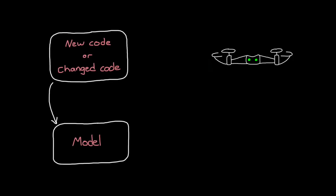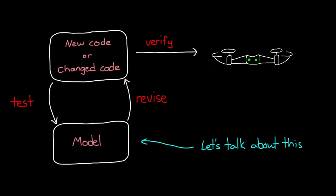But what if we had to develop the code ourselves or make changes to it? How could we design and test the code in a safe way? For that, we need a good model of the mini-drone and the environment it's going to operate in. And that's what we're going to talk about in this video.